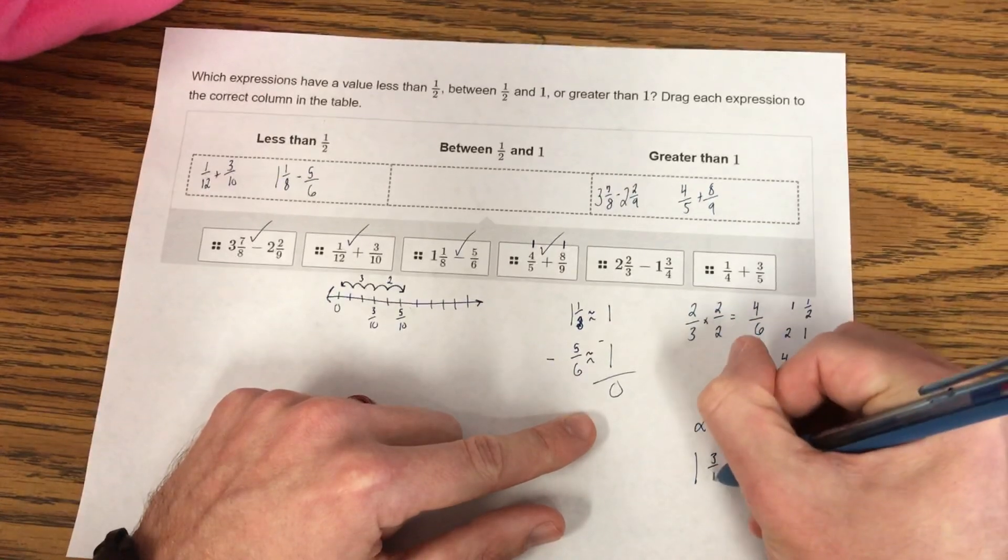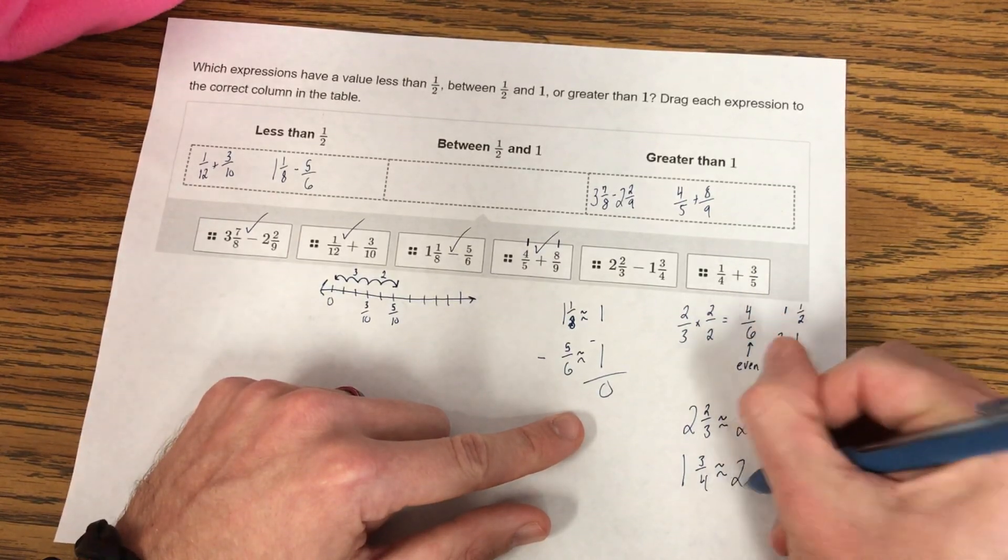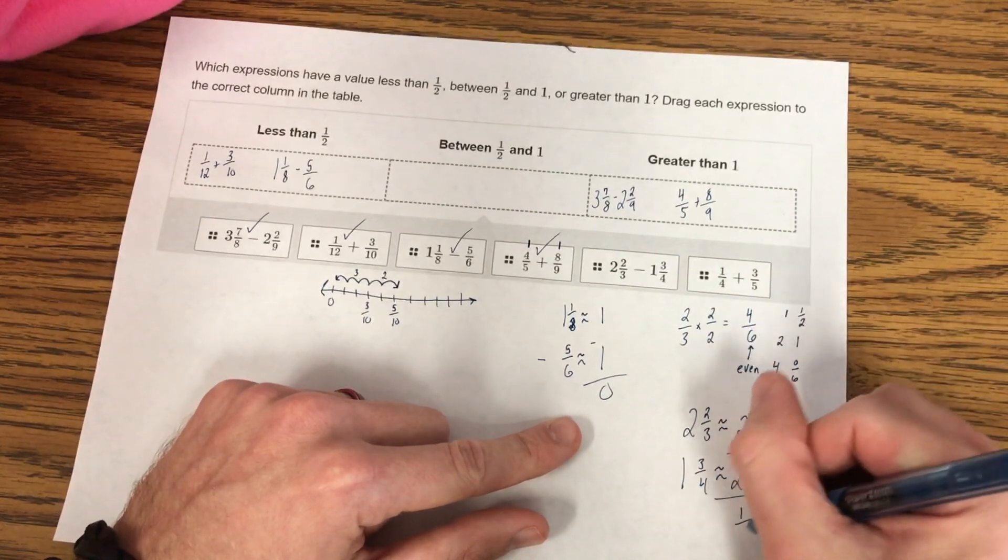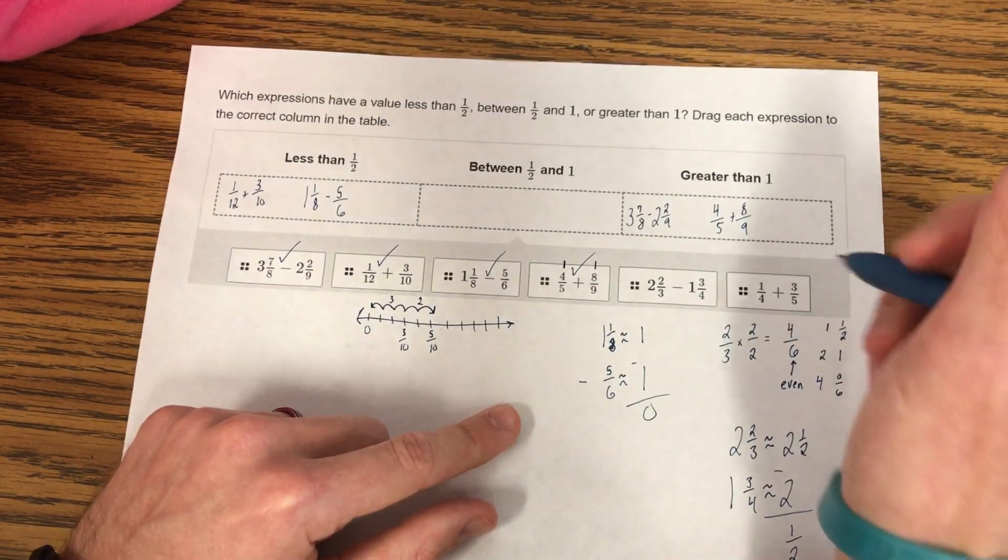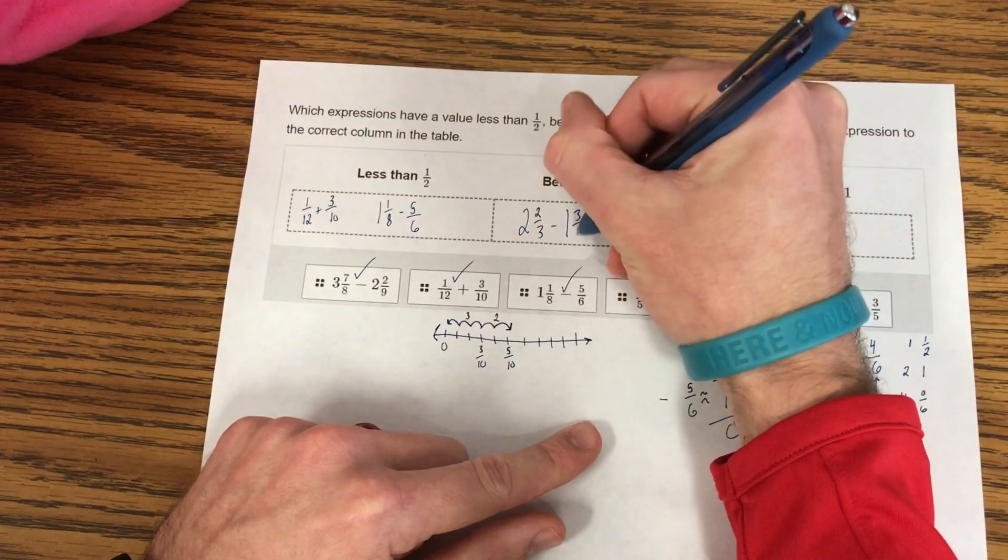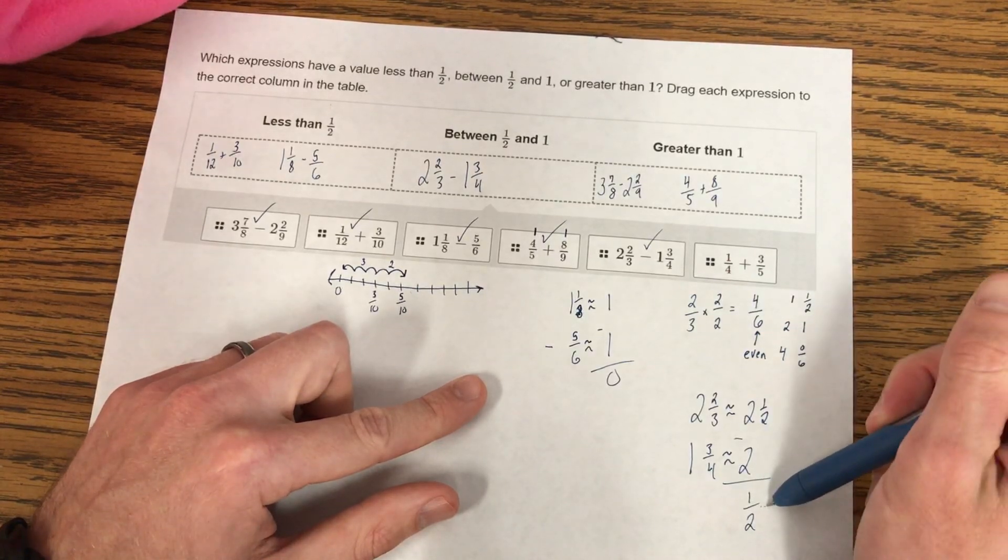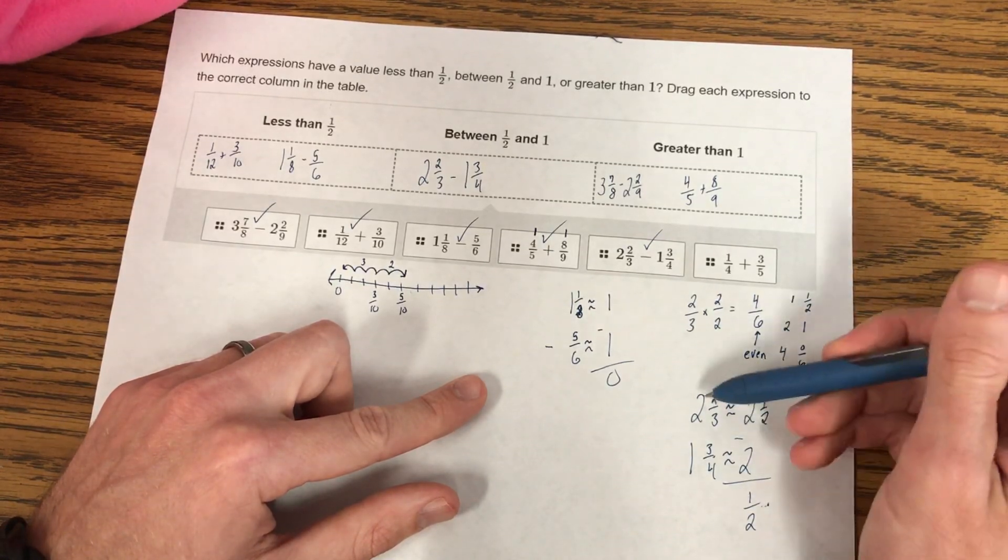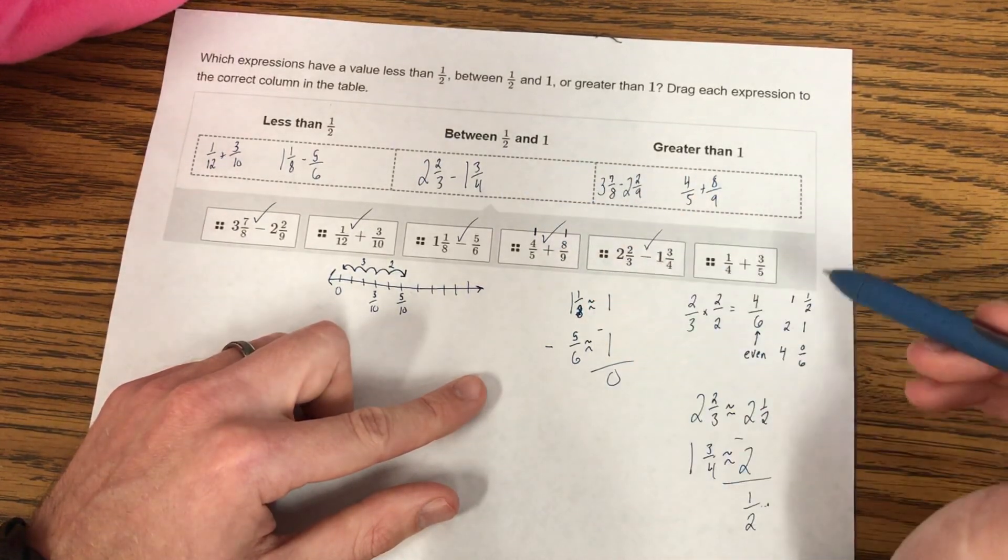It's 2 jumps away from 1 whole, and it's 4 jumps away from 0. So I know that it's got to be closest to 1/2. So 2 and 2/3 is going to round to about 2 and 1/2. And 1 and 3/4, we talked about 3/4. It's one jump away from 4/4 and one jump away from 2/4, but it's usually best to round up. Well, that's going to be about 2. So 2 and 1/2 minus 2 is just 1/2. So that's not greater than 1. That's not less than 1/2. So that's going to be between our 1/2 and 1.